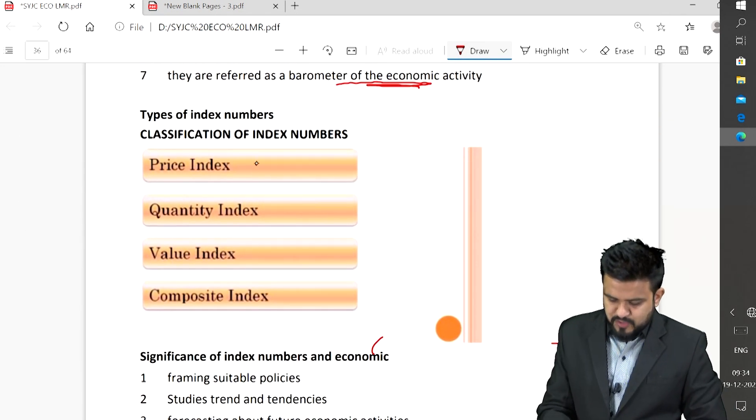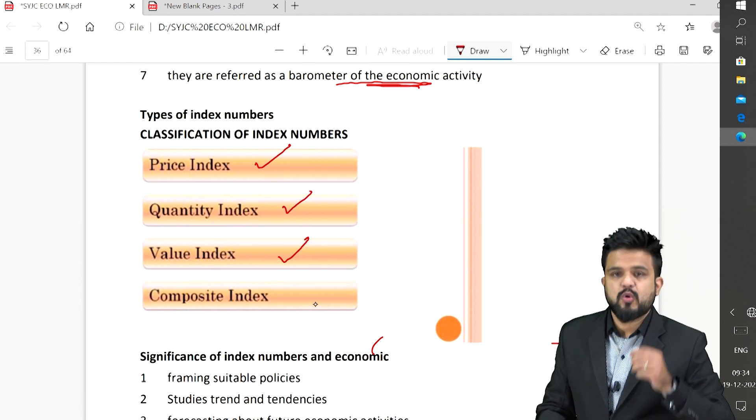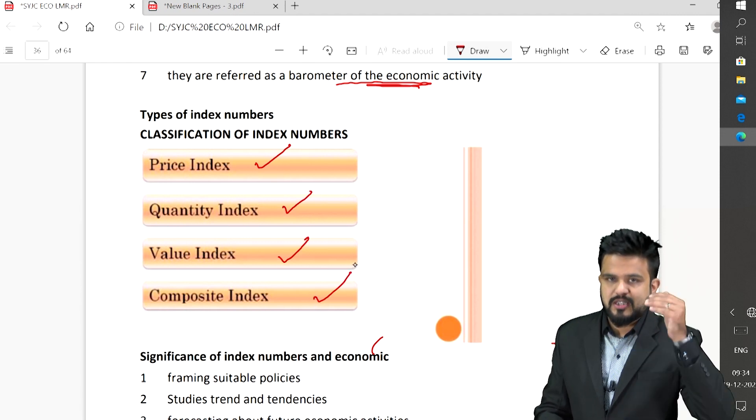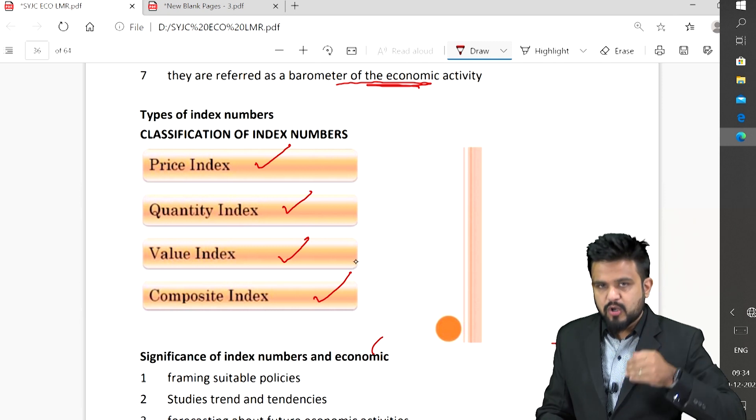Total four types: price index, quantity index, value index, and composite index.